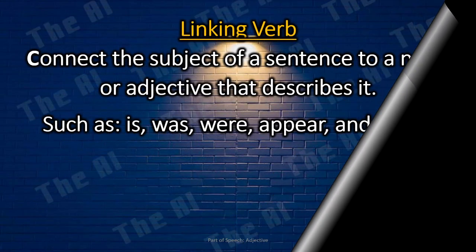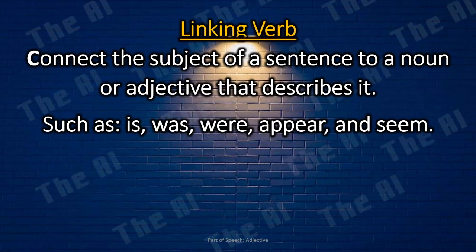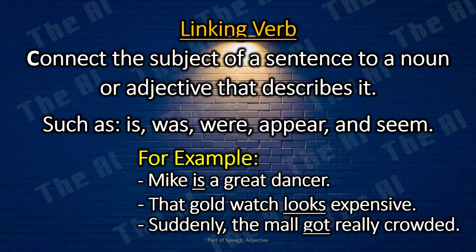The linking verb. Linking verbs connect the subject of a sentence to a noun or adjective that describes it, such as is, was, were, appear, and seem. For example: Mike is a great dancer. That gold watch looks expensive. Suddenly, the mall got really crowded.